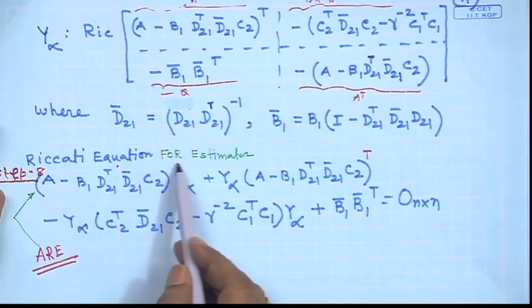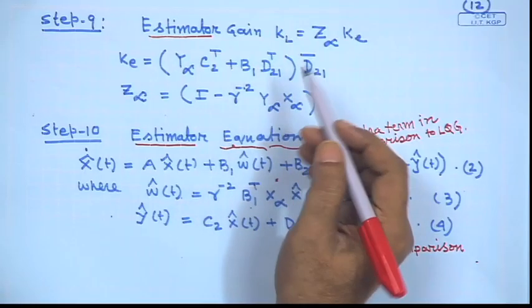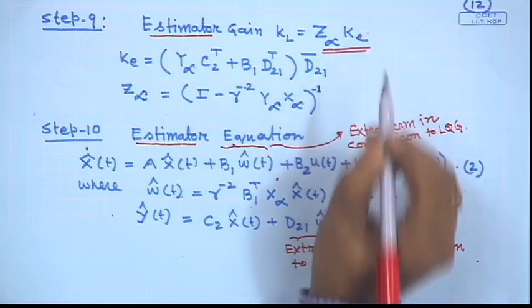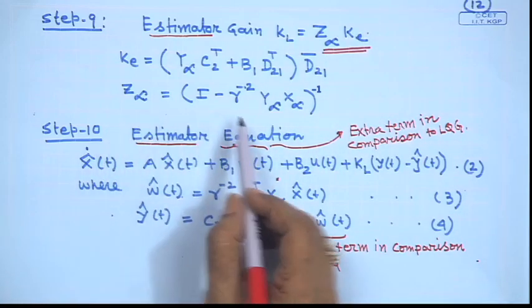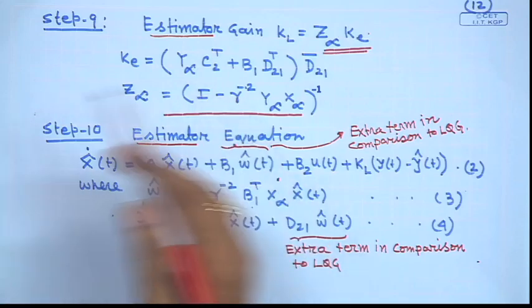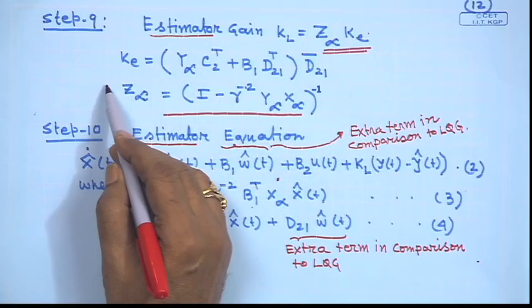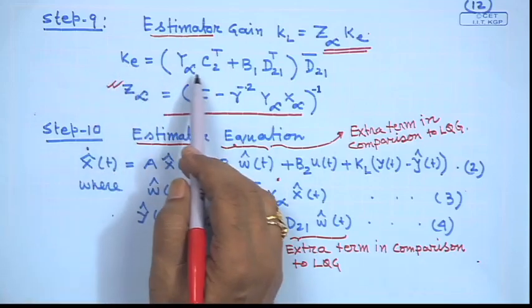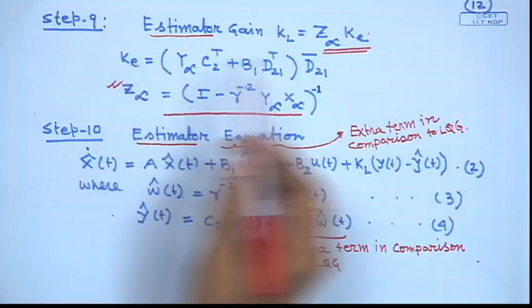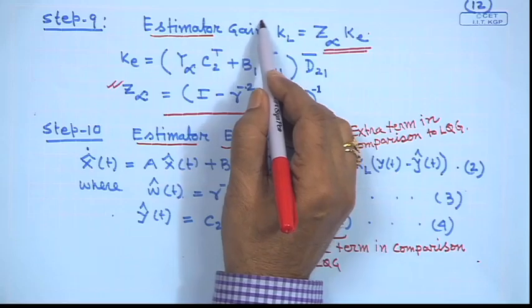Step 8 is solving the estimator Riccati equation. Step 9 is finding the estimator (observer) gain. The estimator gain Ke involves Z∞, where Z∞ = (I − γ⁻²·Y∞·X∞)⁻¹. Knowing X∞, Y∞, and the initially large gamma, Z∞ is known. Then Ke = Z∞·Y∞·C2ᵀ·(D̄21D̄21ᵀ)⁻¹, computed from known matrices.